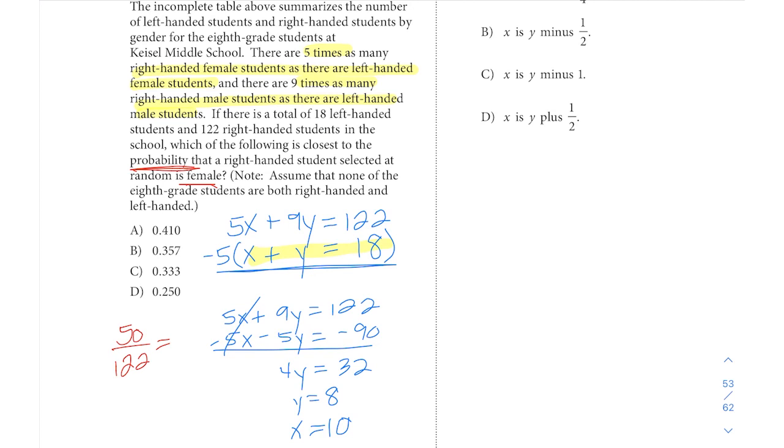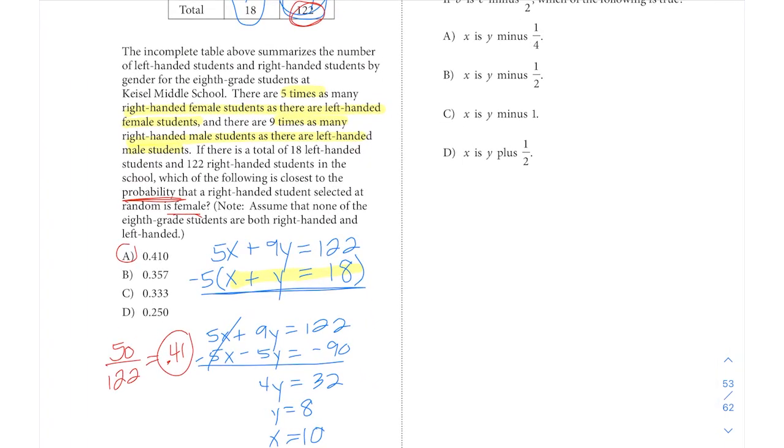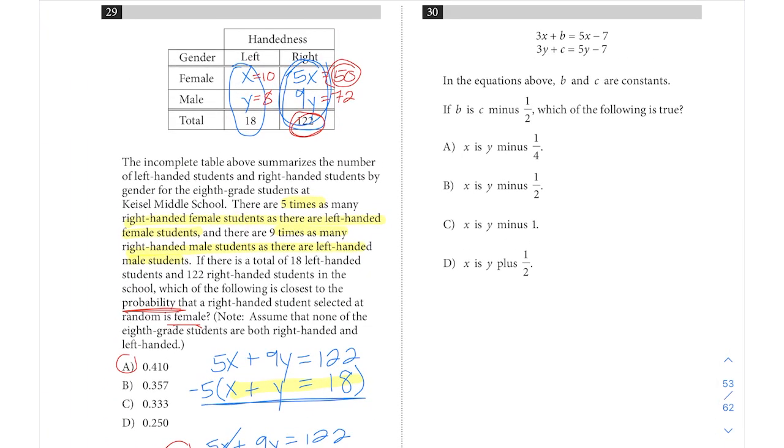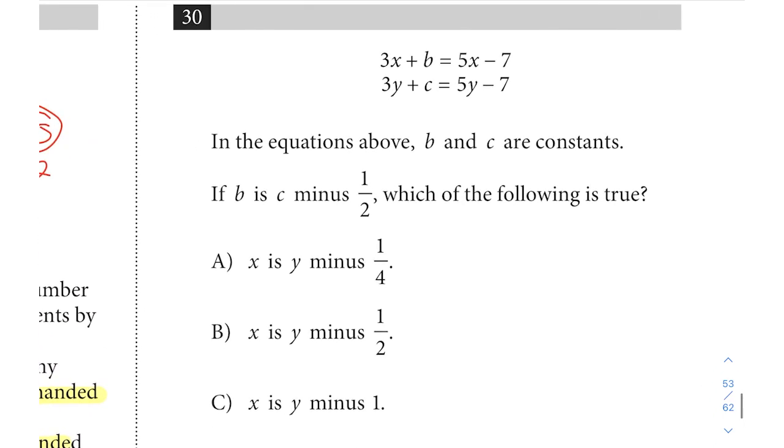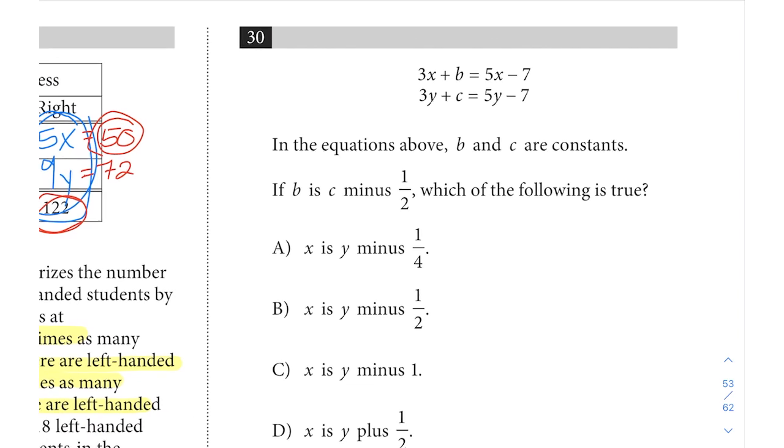Luckily this is calculator section because as you can tell by our answer choices, this math is going to be a little bit messy to try to do on our own. But when you divide that, you get a probability of 0.41, which is answer choice A. Just keep in mind with probability, it's desired results over total possible results.